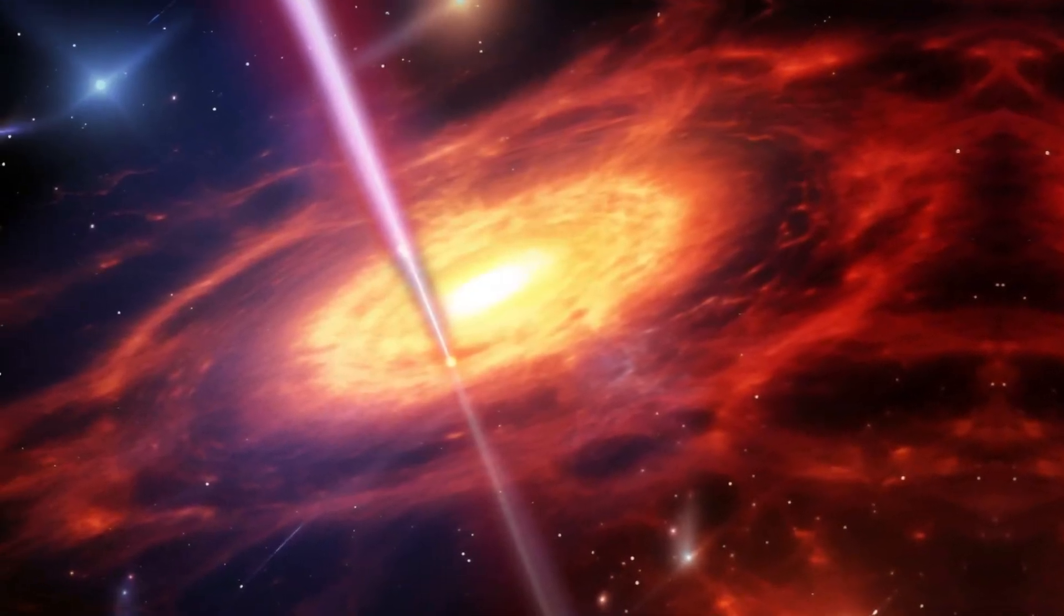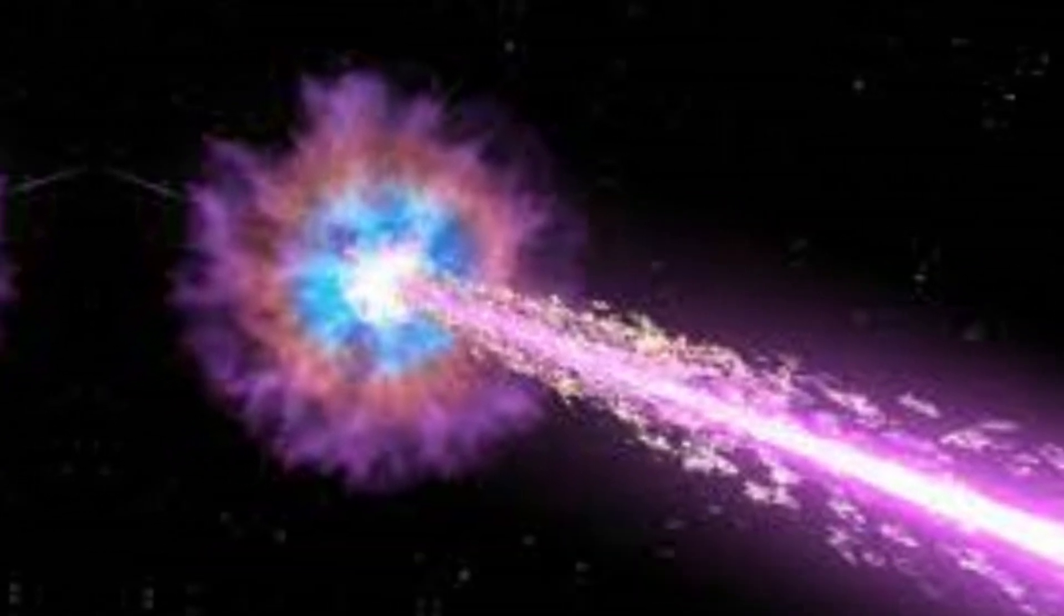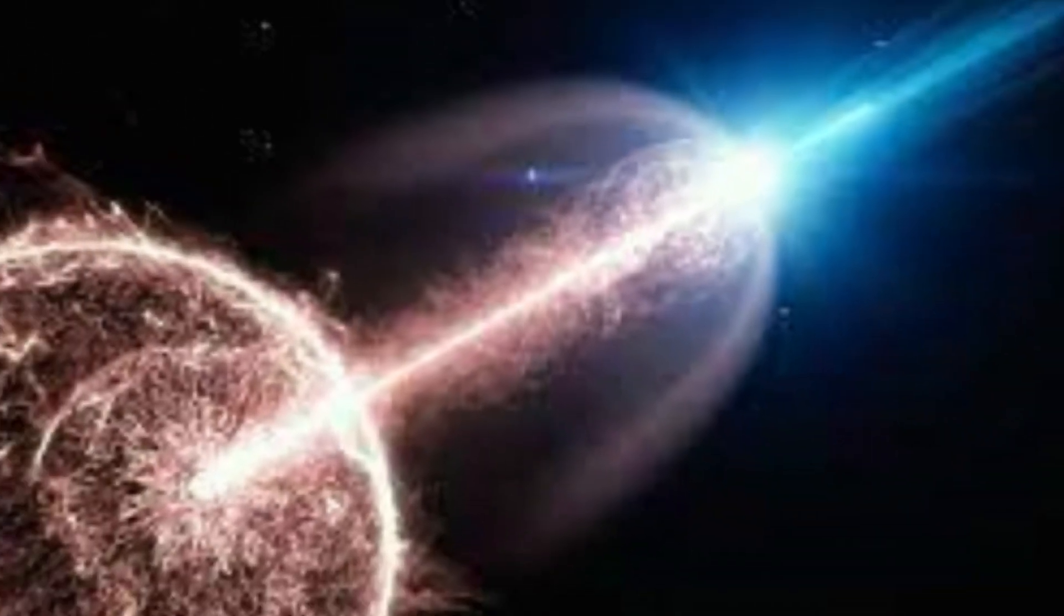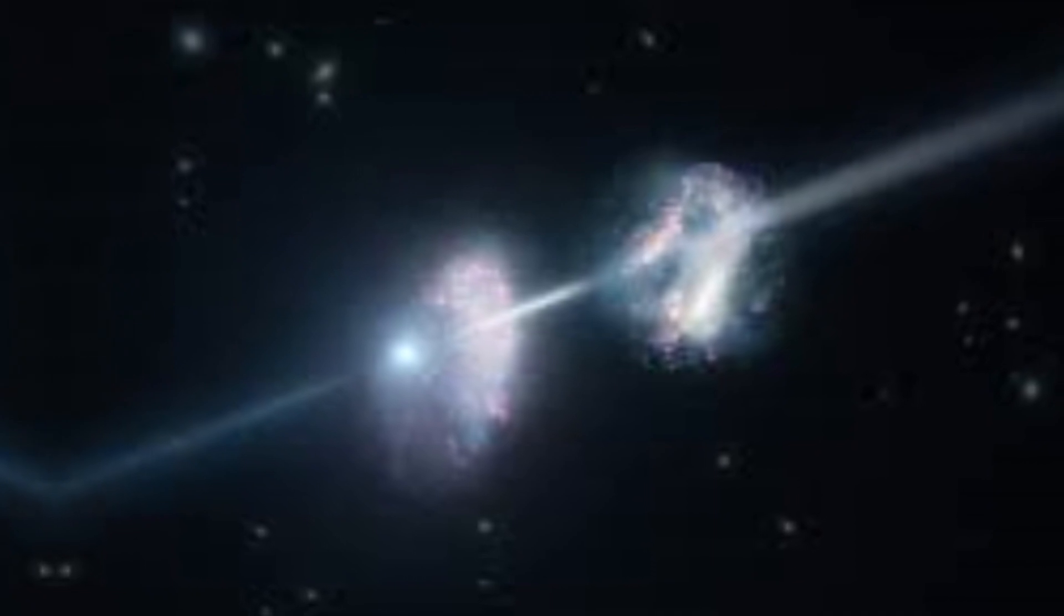Gamma-ray bursts are detected by satellites and telescopes that observe the gamma-ray spectrum, and they can last from a few milliseconds to several minutes. They are classified into two types, short and long, depending on their duration and origin. Gamma-ray bursts are a fascinating and mysterious phenomenon that challenge our understanding of the extreme physics and the evolution of the universe.